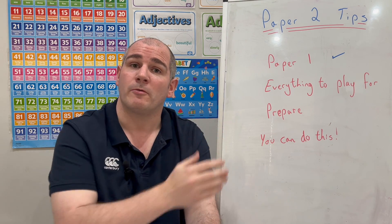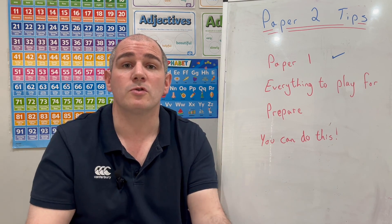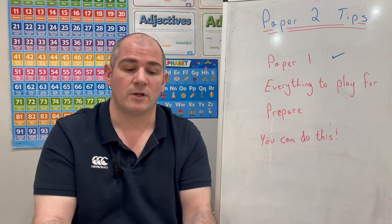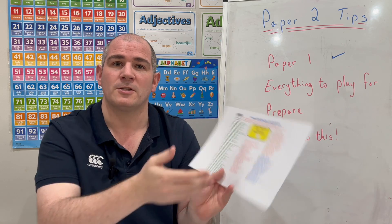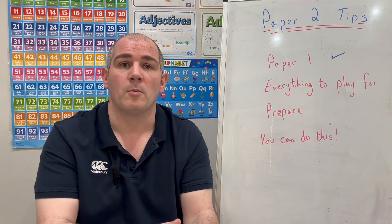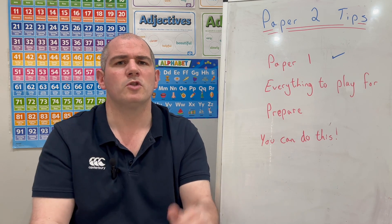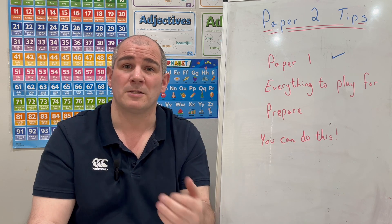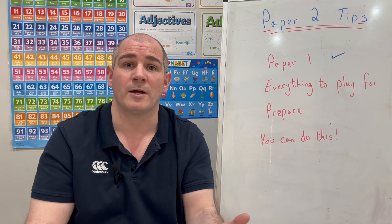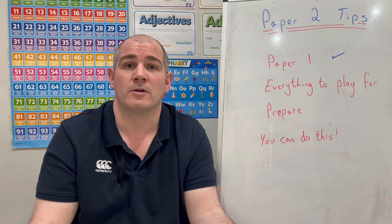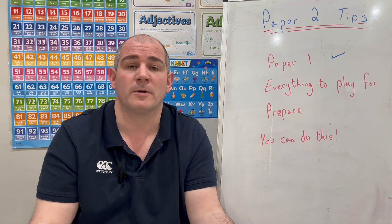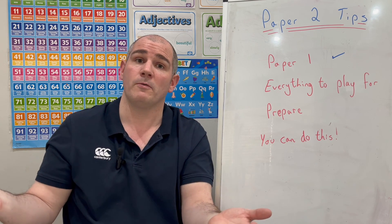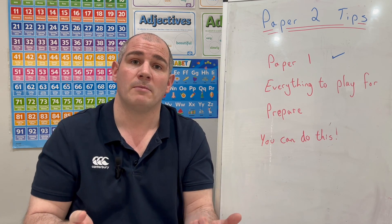In terms of preparing for paper two and paper three, I've made a lot of resources on Corbett Maths for you. The first thing I've done is made these unseen topic checklists. I've had a look at paper one and considered what topics haven't appeared yet. For instance, if paper one took place and there were no Pythagoras and no trigonometry questions, I would revise those topics because there's a good chance they may appear on paper two or paper three, or even both of them.